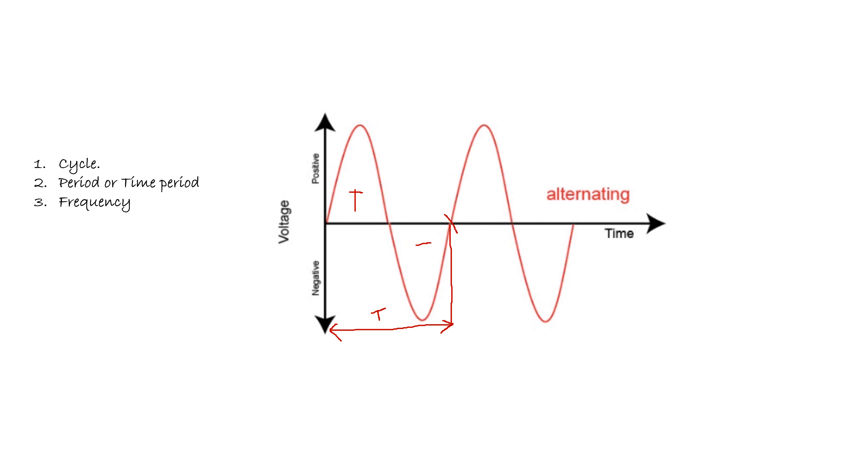Frequency of an alternating quantity is the number of cycles per second. Frequency is the reciprocal of the time period. The most common power frequency in India is 50 cycles per second, also measured in Hertz, which is a scientist's name.